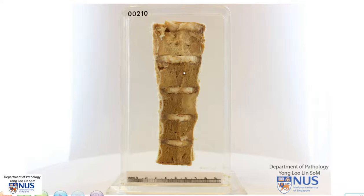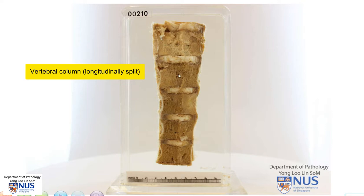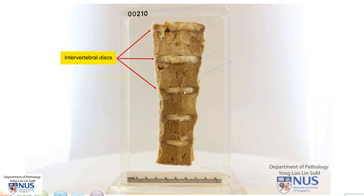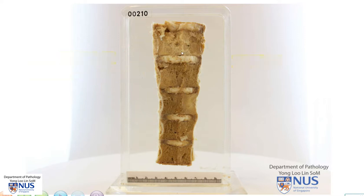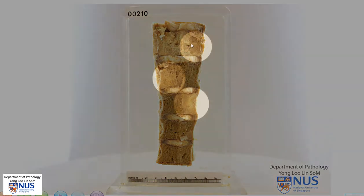Hello, we're looking at a specimen of a segment of the vertebral column that has been longitudinally split and we can see the cut surfaces of the alternating intervertebral discs and the vertebral bodies. I want to draw your attention to three areas which appear abnormal on the cut surface of the vertebral bodies.